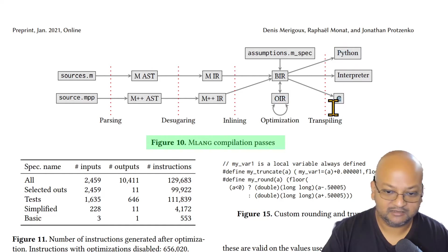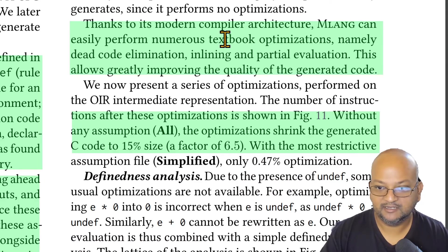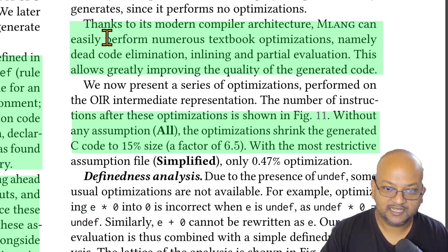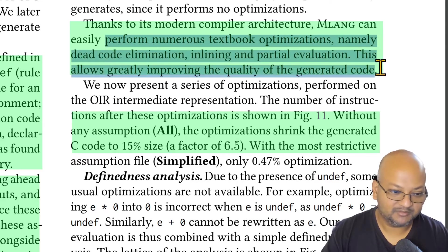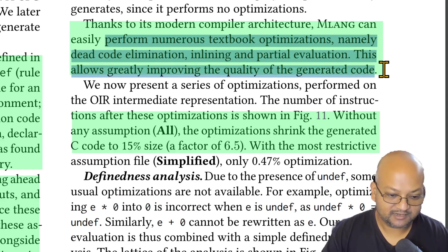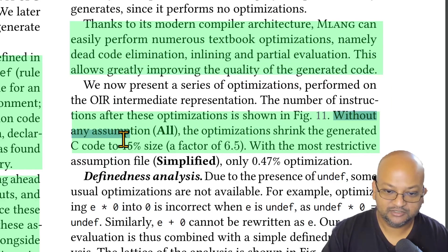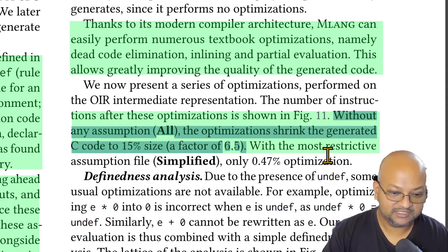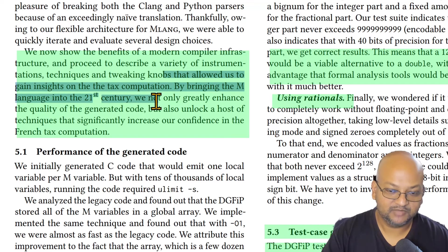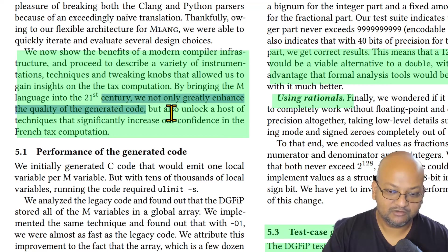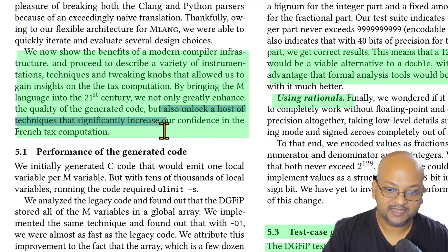One of the big benefits of structuring it as a pipeline compiler is that you can bring the full range of compiler optimizations to bear — things like code elimination, inlining, and partial evaluation, which are all standard textbook compiler optimizations. What they found was that once you do all these optimizations, the generated code shrinks by a factor of about six and a half. By modernizing this entire compiler toolchain for this domain-specific language, they not only get faster, better-performing code, but are also able to do things that increase confidence in the results of the tax computation.